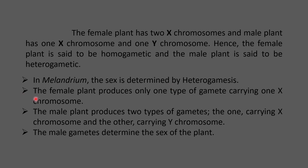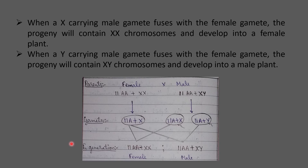Since the female plant is homogametic, it produces only one type of gamete, each carrying one X chromosome. The male plant is heterogametic, producing two different types of gametes — one with an X chromosome and one with a Y chromosome — and thus determines the sex of the progeny.